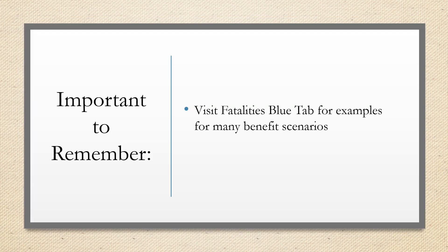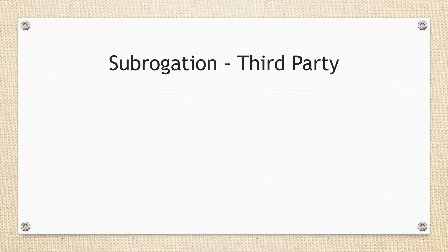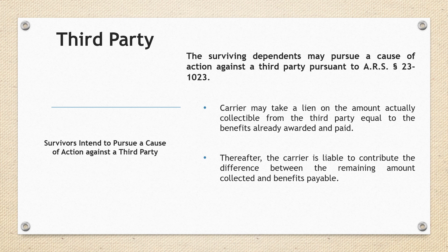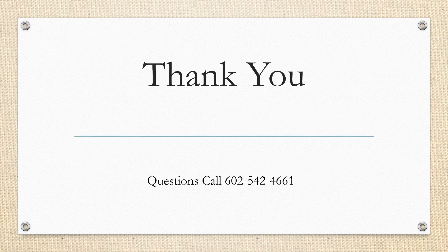Important to remember: visit the Fatalities blue tab for examples for many benefit scenarios. Subrogation — Third Party: The surviving dependents may pursue a cause of action against a third party pursuant to ARS 23-1023. The carrier may take a lien on the amount actually collectible from the third party equal to the benefits already awarded and paid. Thereafter, the carrier is liable to contribute the difference between the remaining amount collectible and benefits payable. Thank you. If there are any questions, please call 602-542-4661.